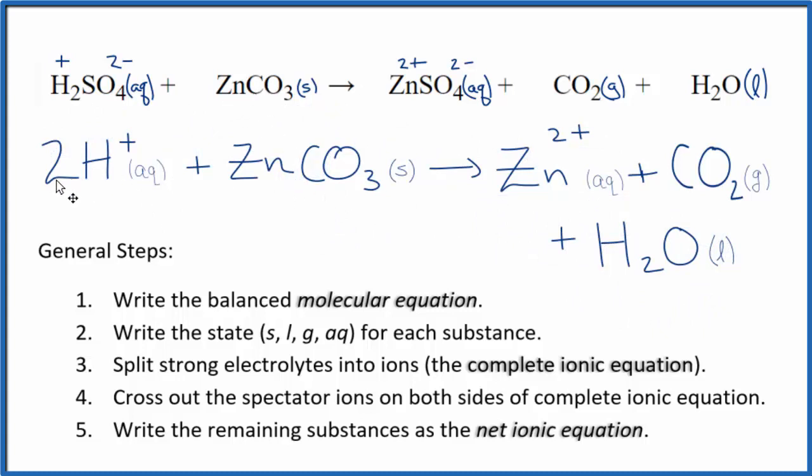You'll note charge is conserved. We have 2 times 1 plus. So we have 2 plus on this side. Over here we have 2 plus. Charge is balanced. If you count the atoms up, they're balanced as well.